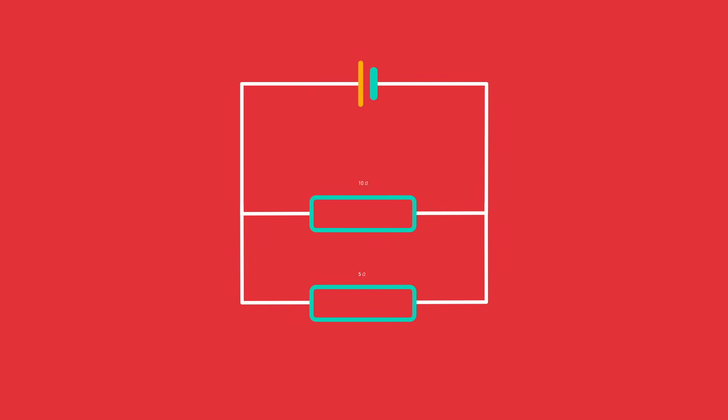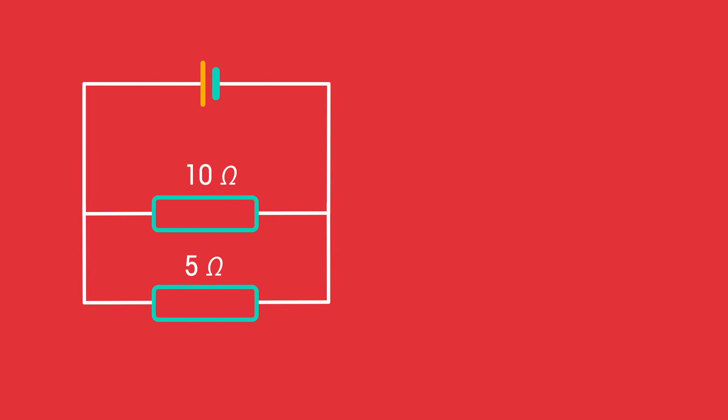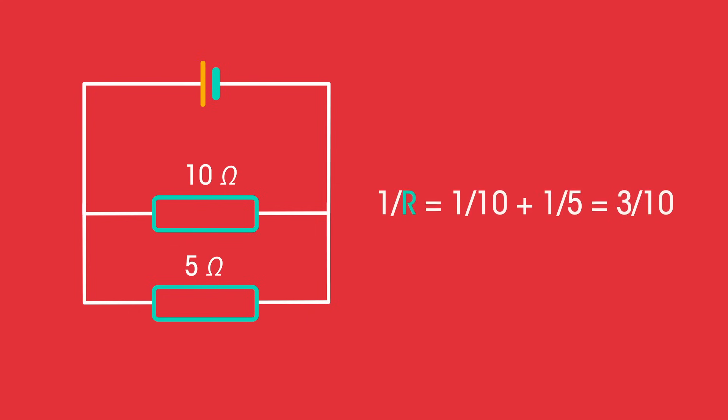Try this one. 1/r equals 1/10 plus 1/5, which equals 3/10. So r is 10/3, which equals 3.33 ohms.